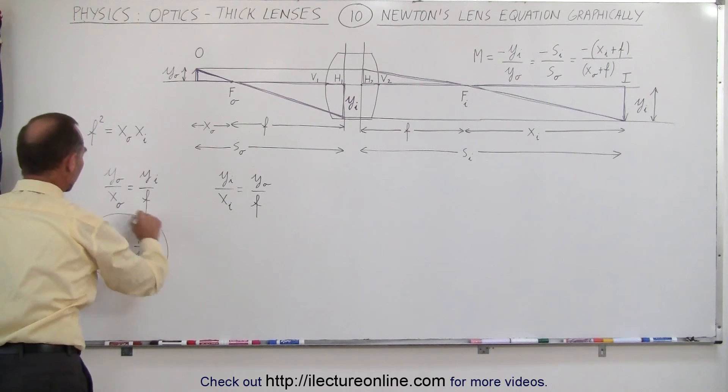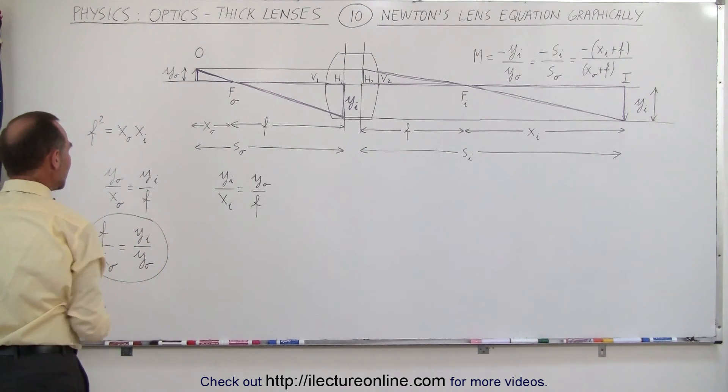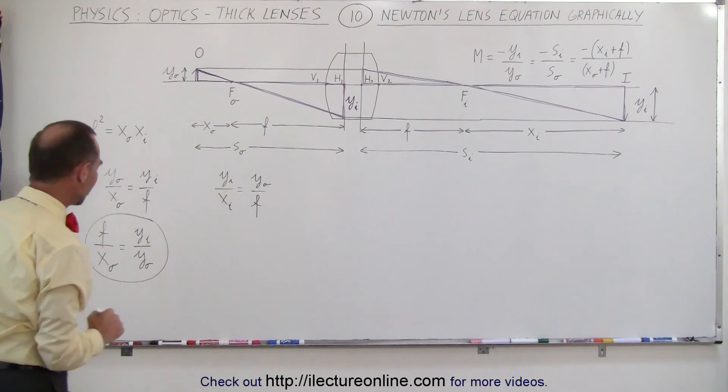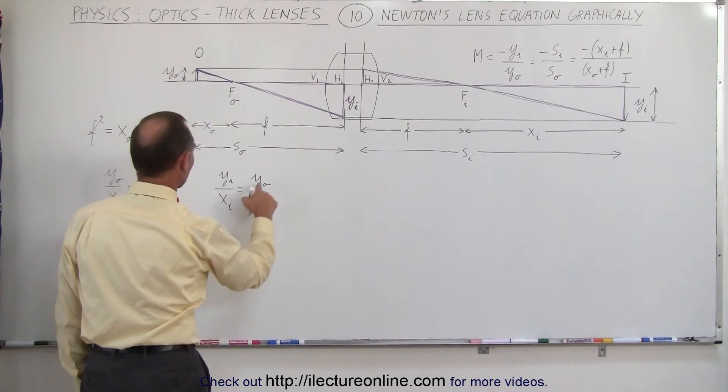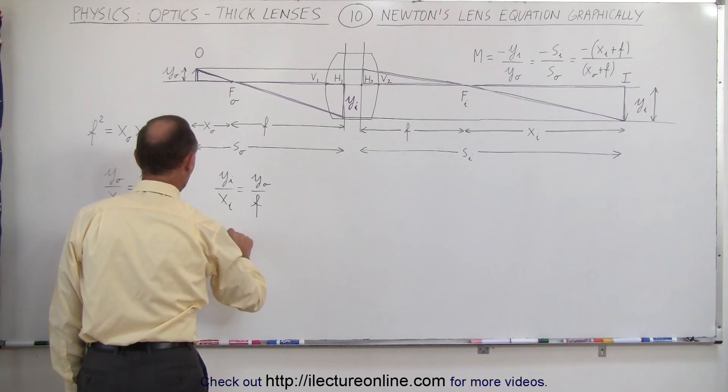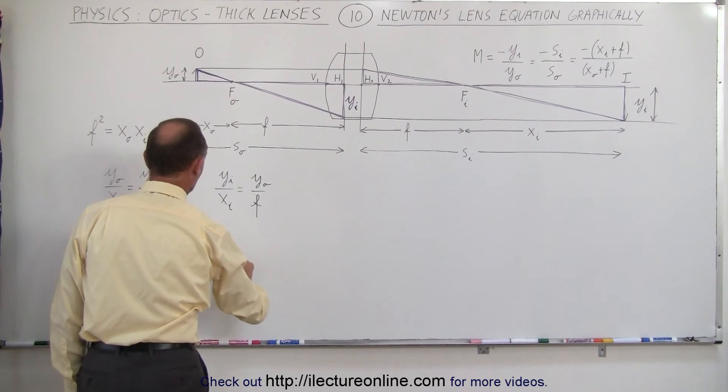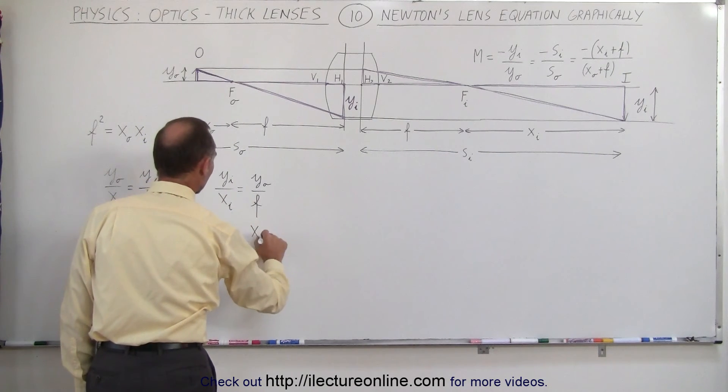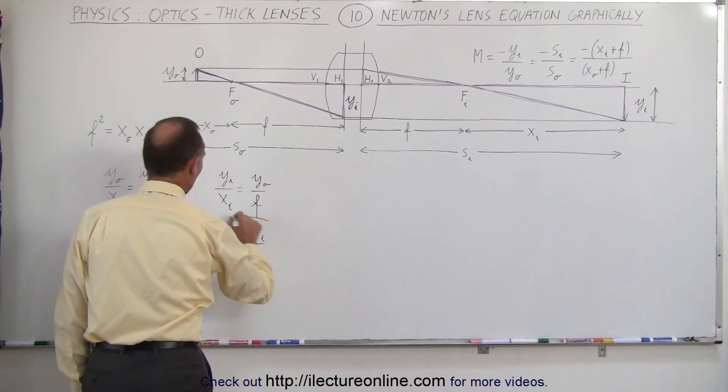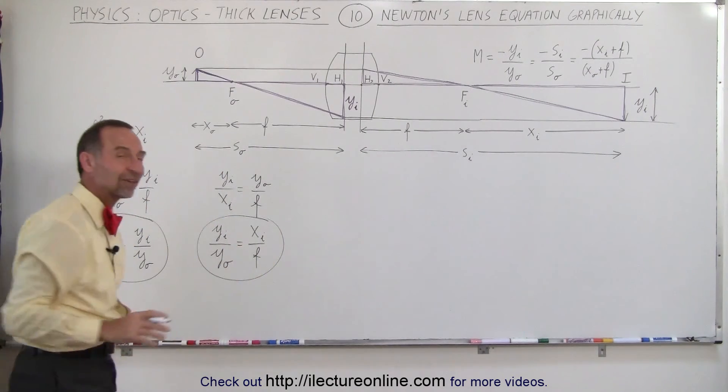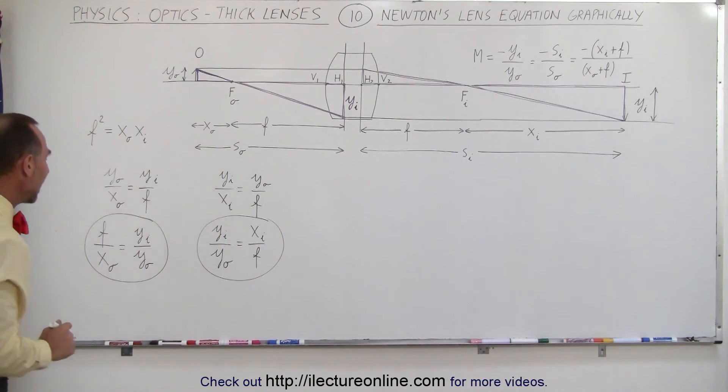So there's our first equation written in terms of the magnification. We'll do the same over here, and in this case I'll bring this down, so we have y sub i divided by y sub O equals x sub i divided by f. And again, we left out any negative signs. This is simply the ratio of magnitudes.